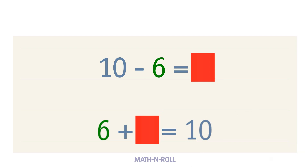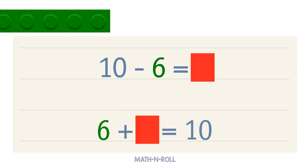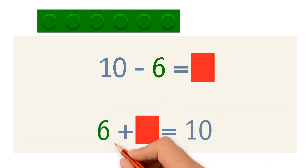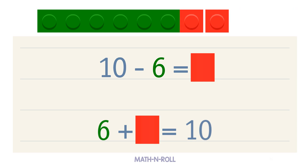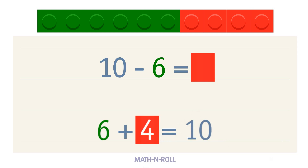Use a model to solve the addition fact. We have 6 green pieces. How many more pieces do we need to make 10? 1, 2, 3, 4. We needed 4 more pieces to make 10, so 6 plus 4 equals 10. 4 is our blank, so 10 minus 6 equals 4.